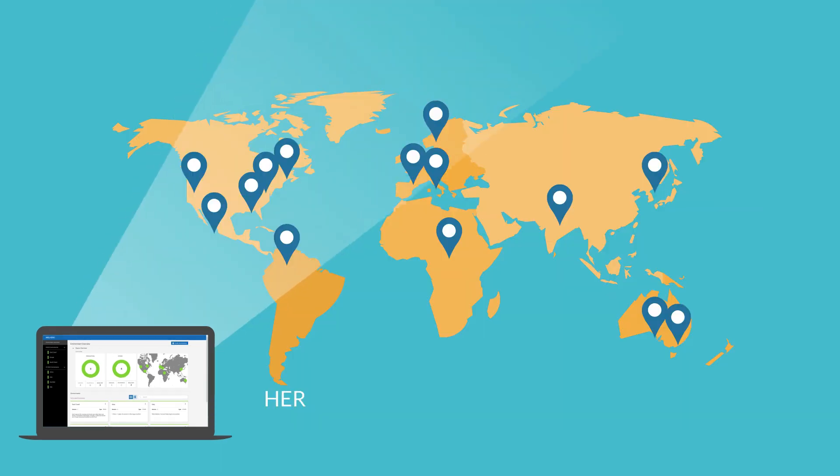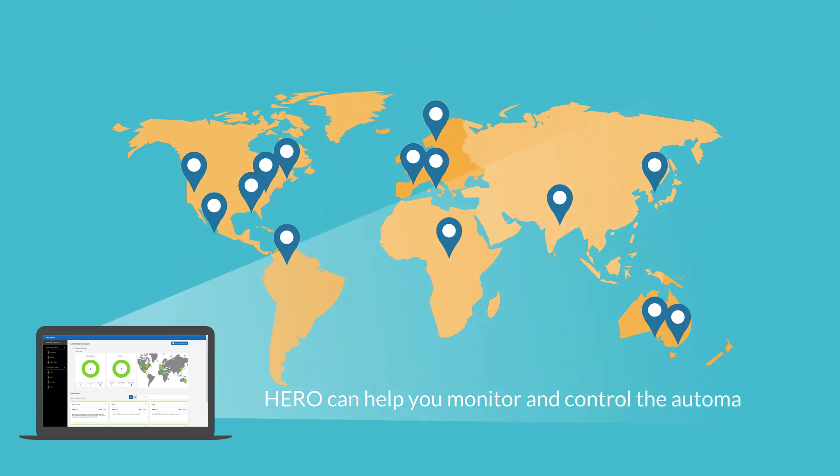It also provides trend estimation of KPIs that helps you prevent service interruptions to your business-critical automated processing. You will now see how Hero can help you monitor and control the automation of your applications and prevent issues in a proactive way.